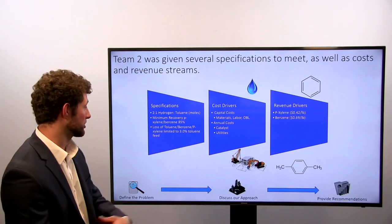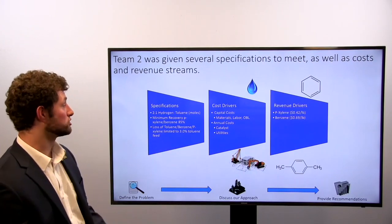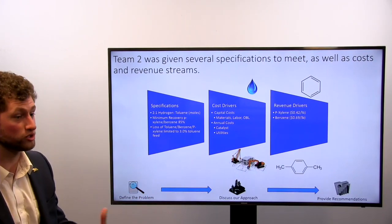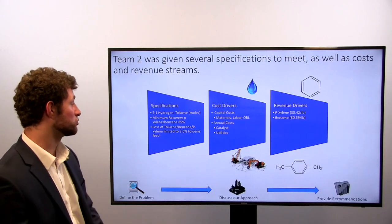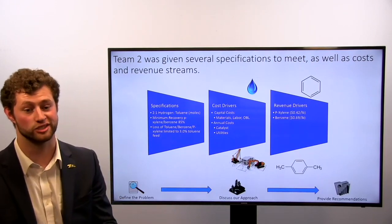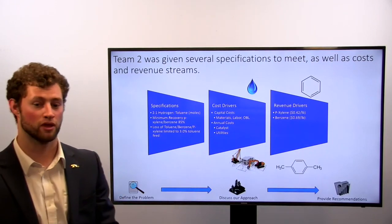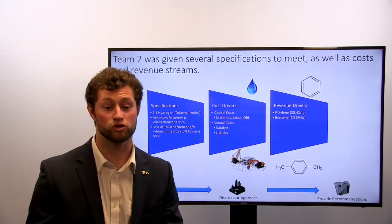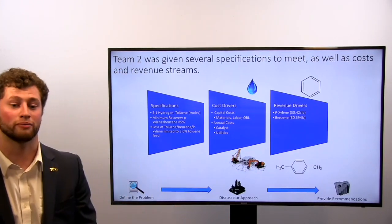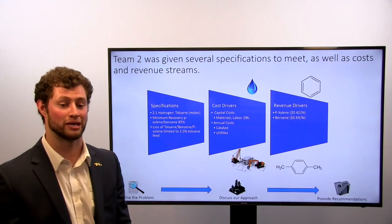So how are we going to do this project? We'll talk about some cost drivers. Capital costs include material, labor, and out-of-boundary limits, as well as annual costs such as catalysts and utilities that occur every year. We also have revenue drivers — how we're going to make our money — and that's generally by selling our p-xylene and our benzene.